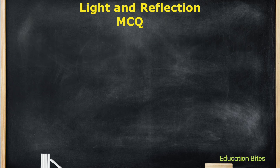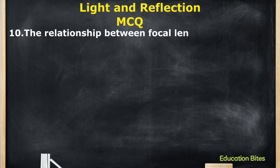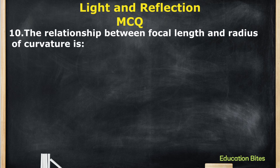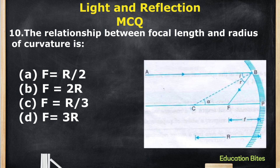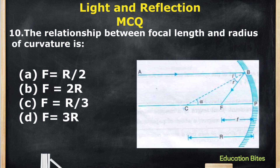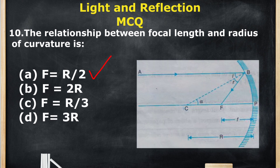The last question: What is the relationship between focal length and radius of curvature? As you can see in the image, f is always equal to R divided by 2. So the correct option is A: f = R/2.